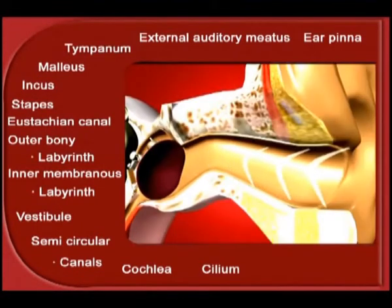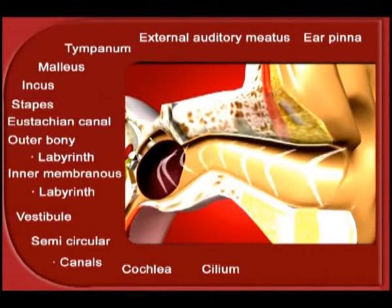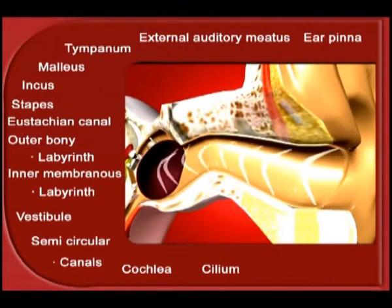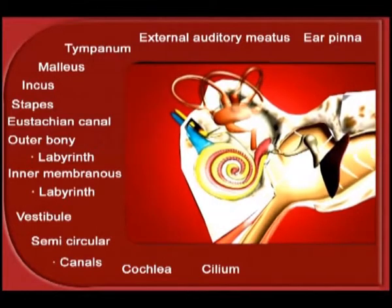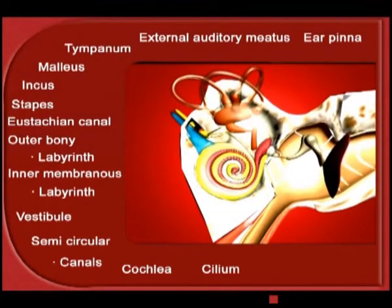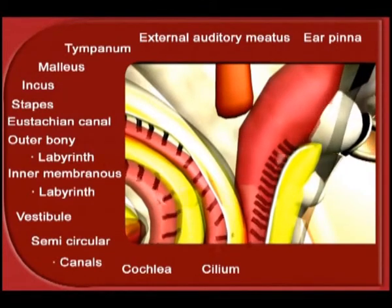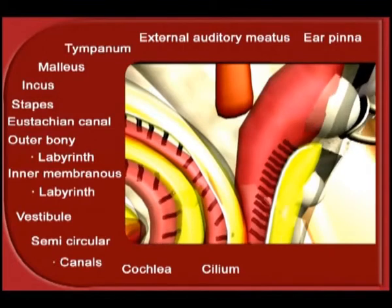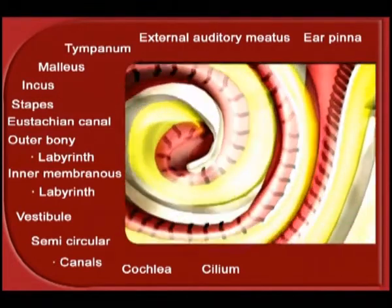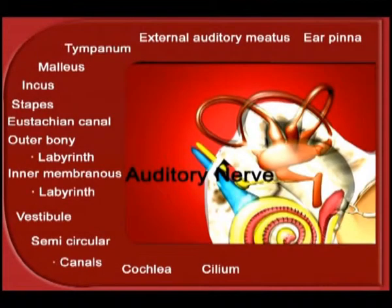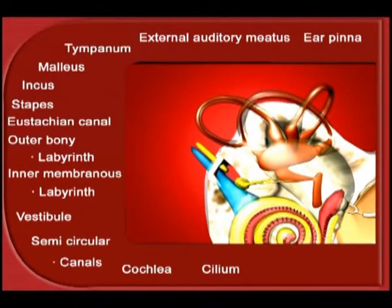In summary, as soon as the pinna catches the sound, it directs it onto the tympanum through the external auditory meatus. The tympanum vibrates and through the chain of bones — malleus, incus, and stapes — the endolymph vibrates. These vibrations in the endolymph move the cilia, and this movement generates an electrical impulse in the ciliated cells, which is sent to the brain through the auditory nerve.